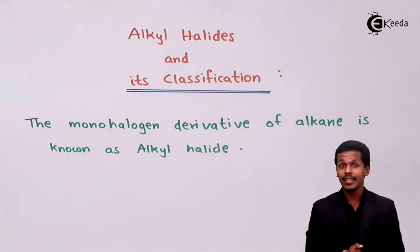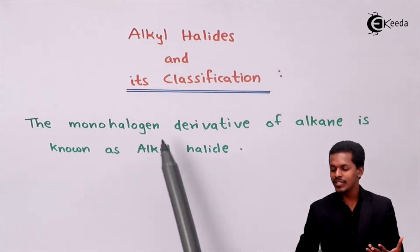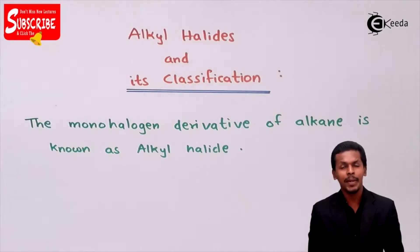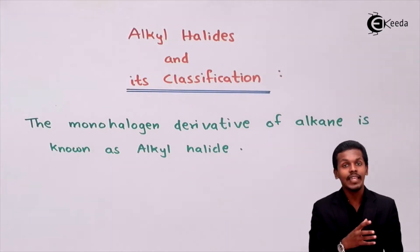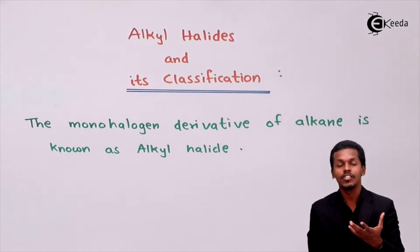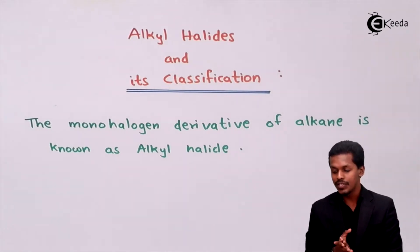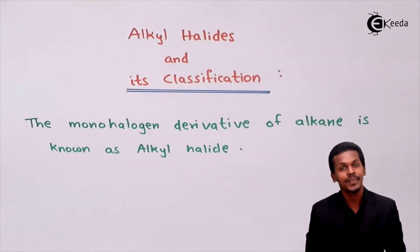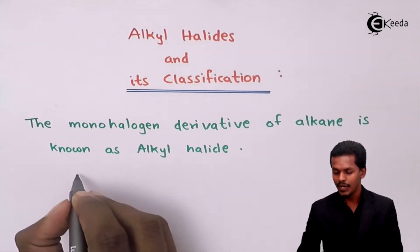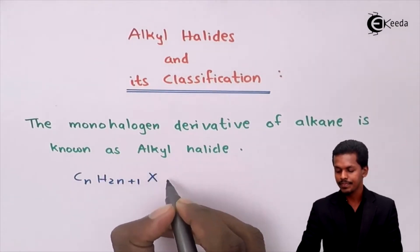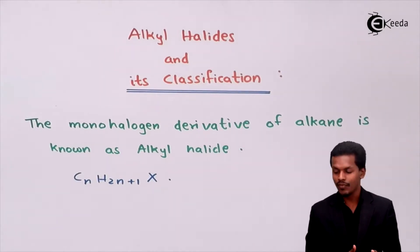Alkyl halides are monohalogen derivatives of alkane. When one hydrogen atom of an alkane is replaced by only one halogen atom, the product formed is known as the monohalogen derivative of alkane, or haloalkane, also called alkyl halide. The general formula for alkyl halide is CnH2n+1X.